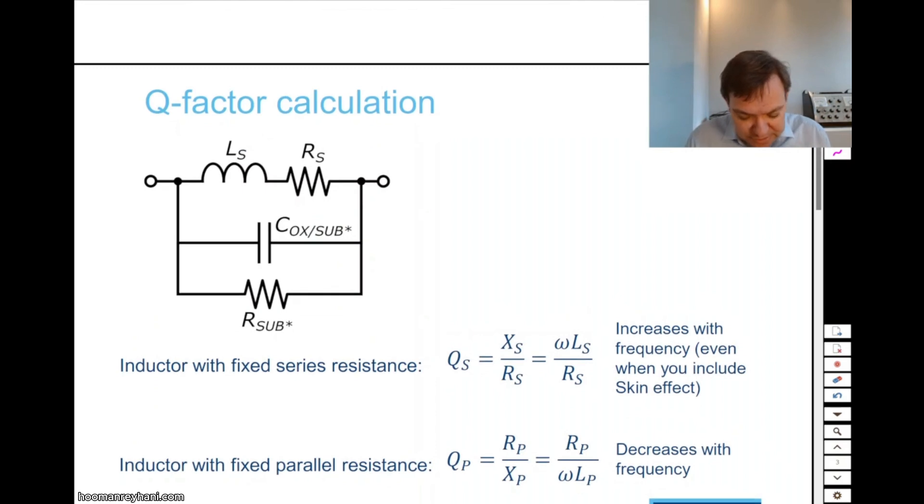All right, so taking that into account, let's simplify things, as we always do in this course. Let's just say that we can somehow boil it down to an inductor, an ideal inductor, with a series resistance and with a parallel resistance. And a parallel resistance is somehow linked to the substrate.